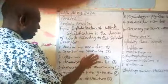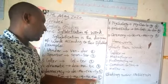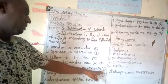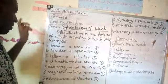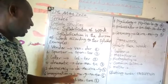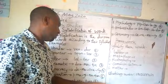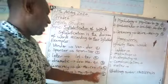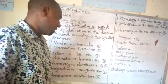Number four: dramatic. Dramatic is a polysyllabic word because it has three syllables. Number five: democracy — it has four syllables, so we call it a polysyllabic word. Number six: imagination — it has five syllables, so we call it a polysyllabic word.